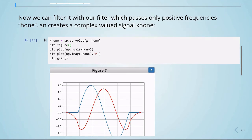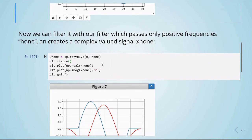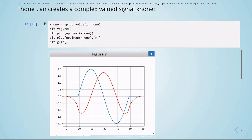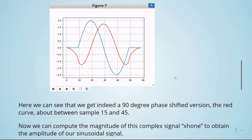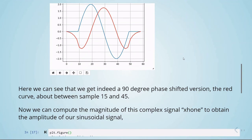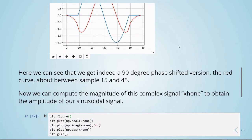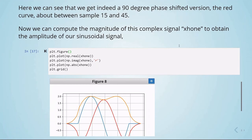This is where we're convolving our signal with the H1, and then we're plotting the real part and the imaginary part, and here we can see that we get, indeed, a 90-degree phase-shifted version, the red curve, about between sample 15 and 45. Now, we can compute the magnitude of this complex signal, XH1, to obtain the amplitude of our sinusoidal signal.